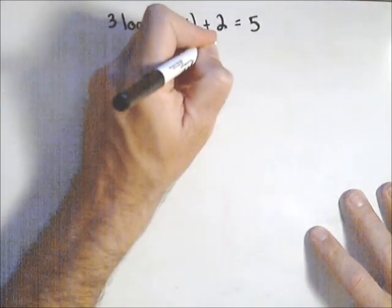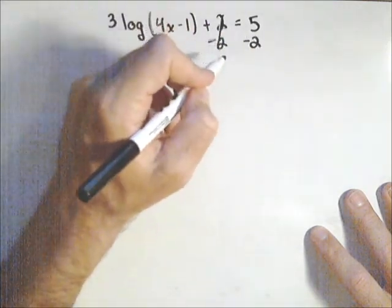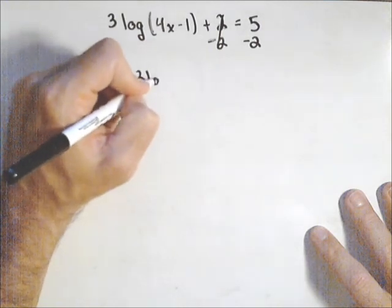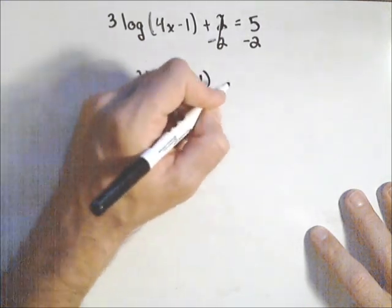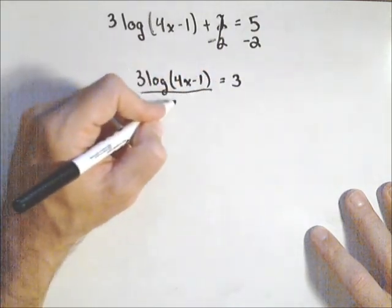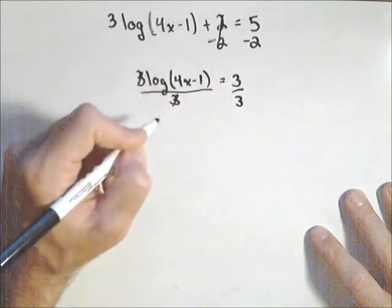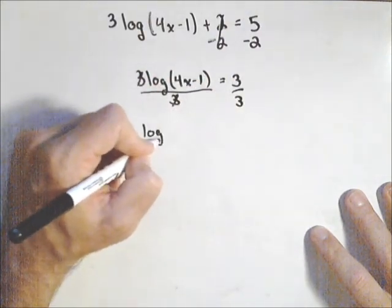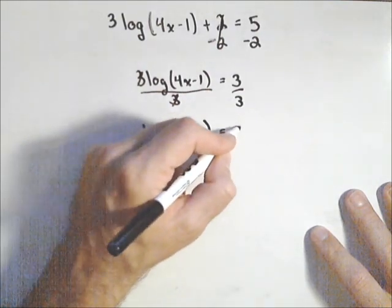So to do that, first thing we're gonna do is subtract two off of both sides, cancel out there. And so we have three log of four x minus one equals three. Now we'll divide both sides by three. And so we get log of four x minus one equals one.